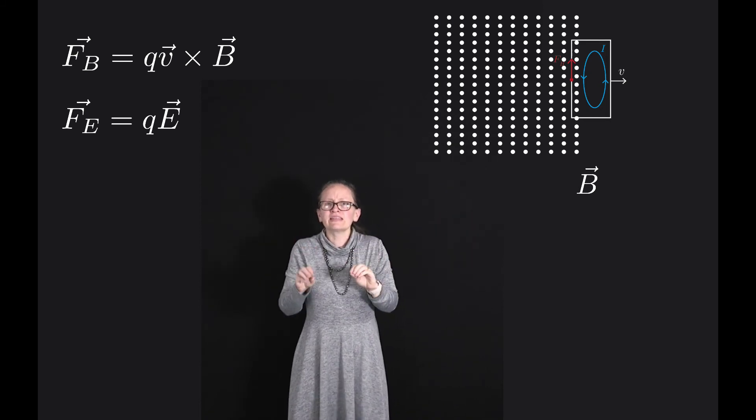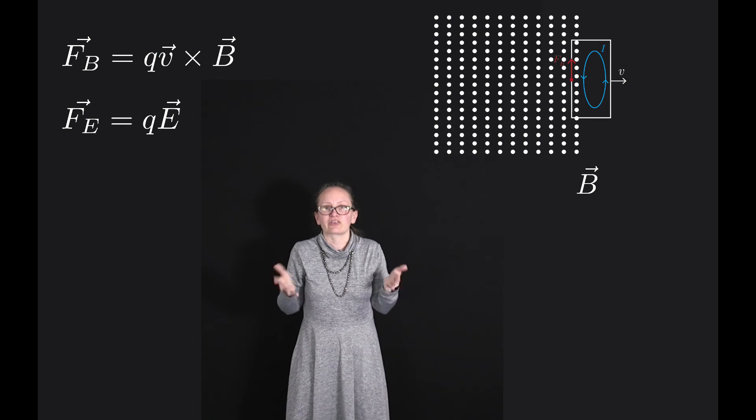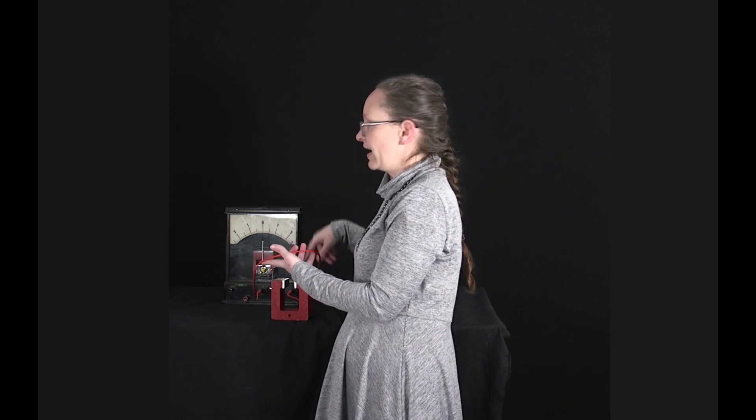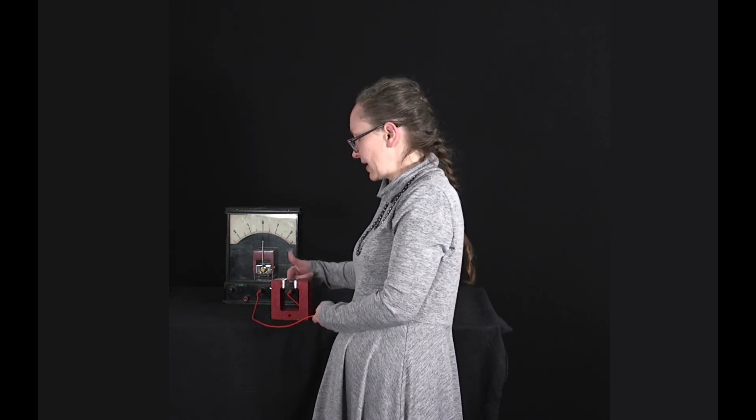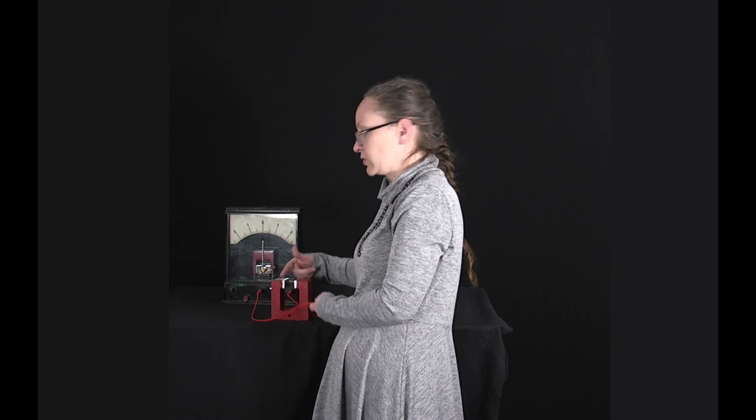So let's have a look at a demonstration showing that this actually happens in real life now. What I have here is a loop of conducting wire connected to an ammeter which can measure current. And here's a horseshoe magnet with a north pole and a south pole. So we've got magnetic field lines going across between here.